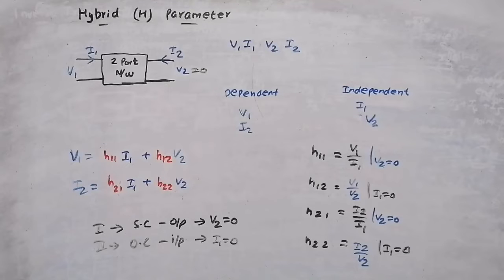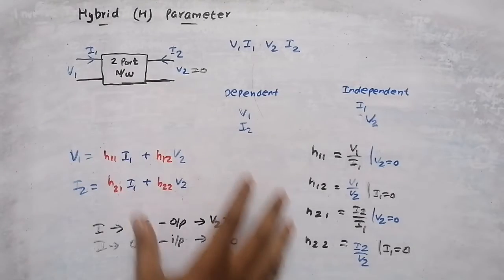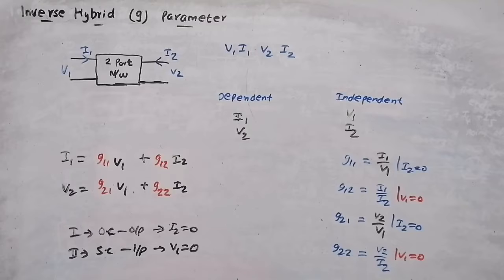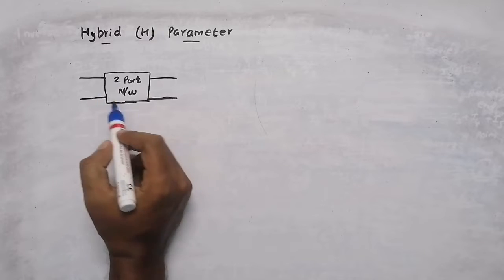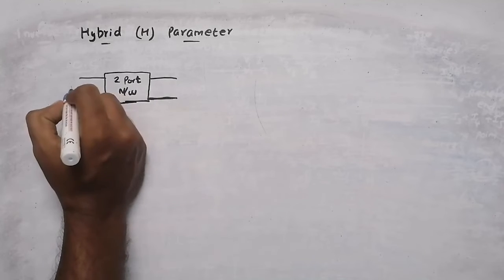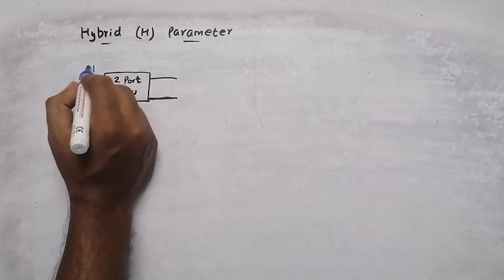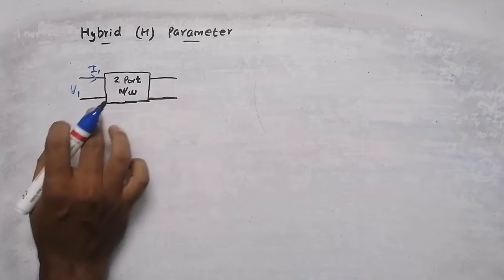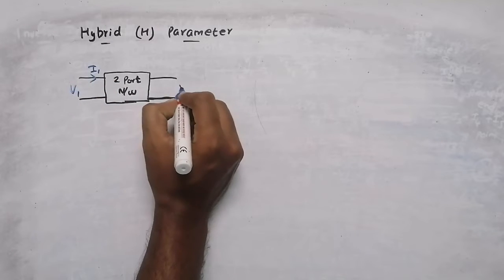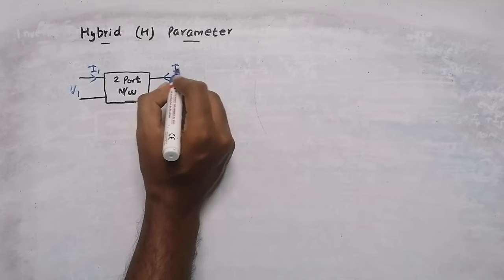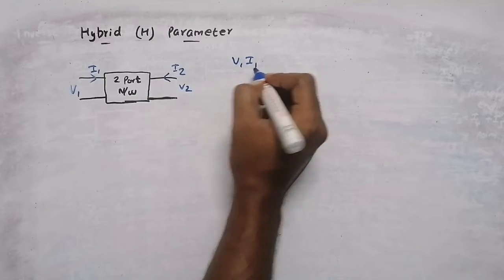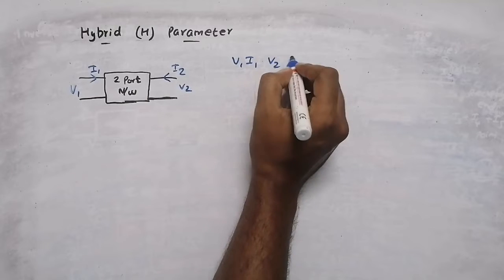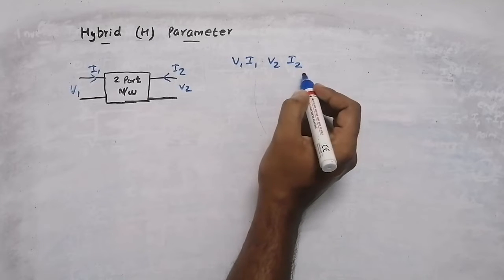In this video we are going to discuss hybrid parameters and inverse hybrid parameters. In a two-port network, there will be voltage and current v1 and i1 in the input terminal and v2 and i2 in the output terminal. So totally there are four variables: v1 and i1 in the input terminal, v2 and i2 in the output terminal.